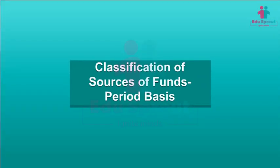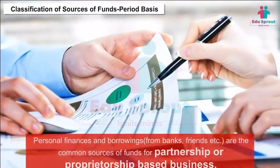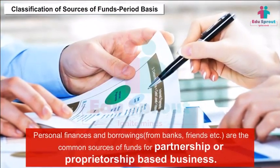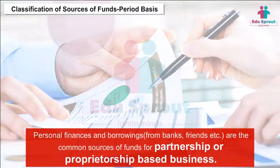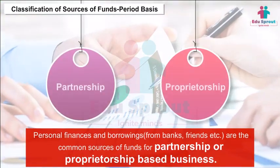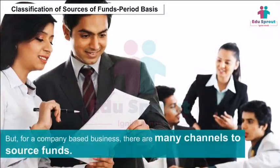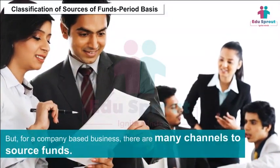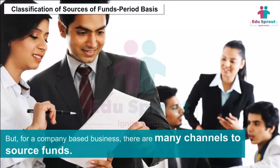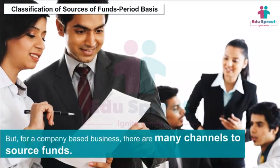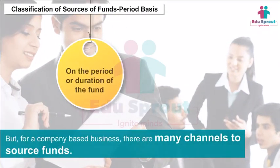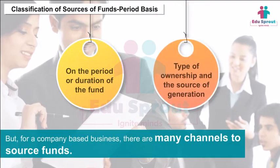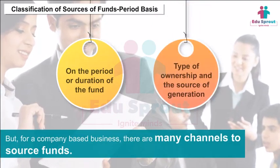Classification of Sources of Funds. Personal finances and borrowings are the common sources of funds for partnership or proprietorship-based businesses. But for a company-based business, there are many channels to source funds. They can be classified based on the period or duration of the fund, type of ownership, and the source of generation.